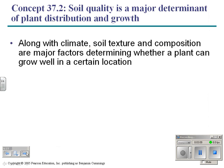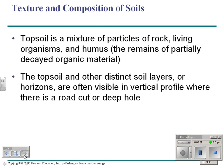Along with climate, plants have to get their nutrients from the soil, so soil quality is an important piece of this. Topsoil is composed of rock, living organisms, and decayed organic material. Soil comes in layers called horizons.